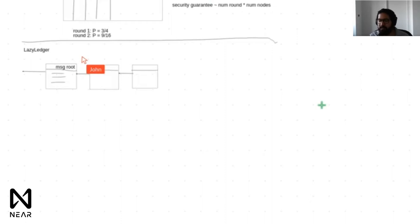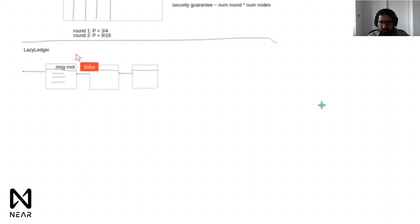Which consensus protocol you use influences how much state you'll need in practice. If you're doing proof of work you don't need any state to manage block producers. With proof of stake you'll need some consensus-critical state somewhere to manage the validator set. But that's the bare minimum — everything else is just messages, just zeros and ones.